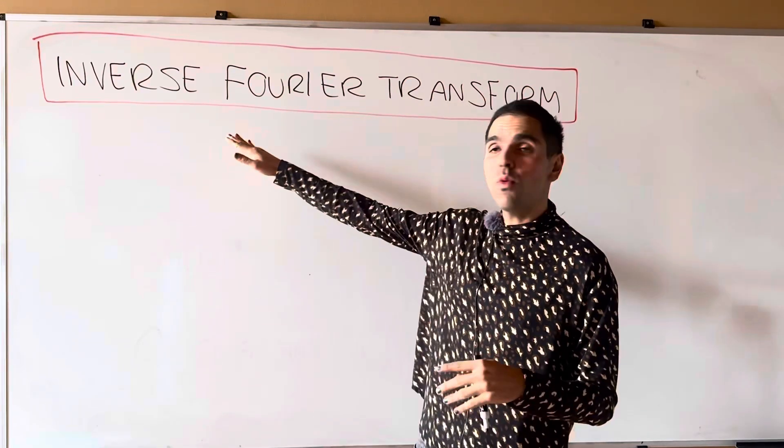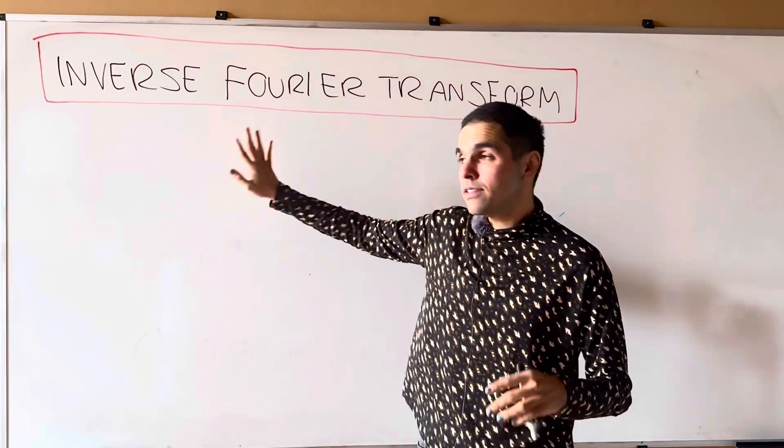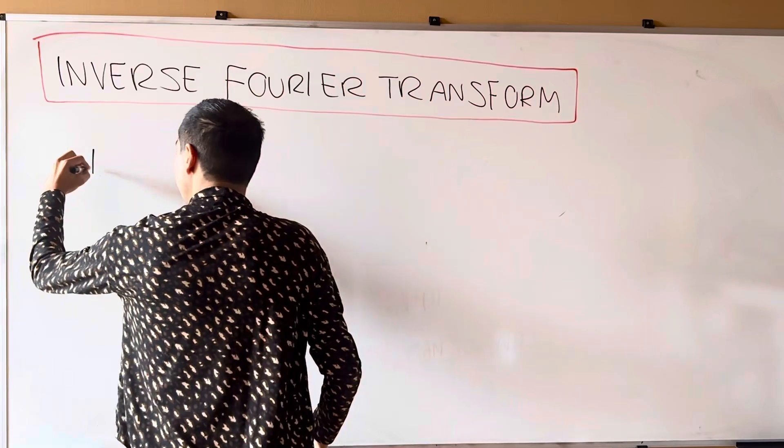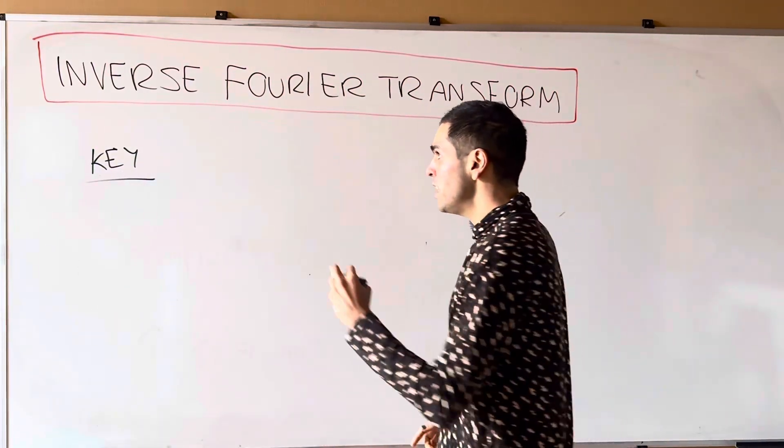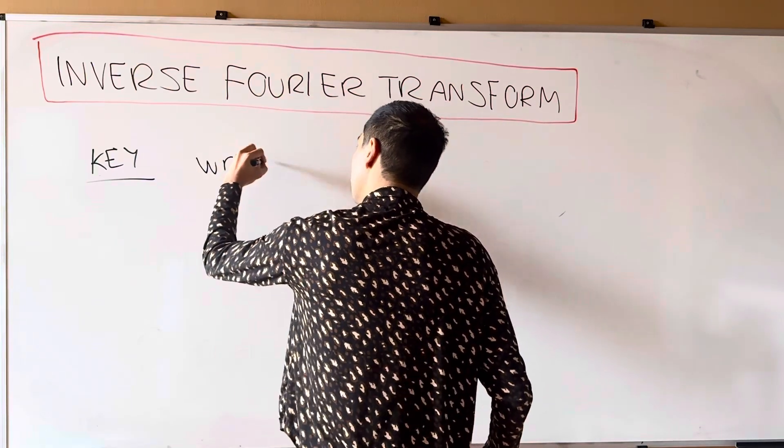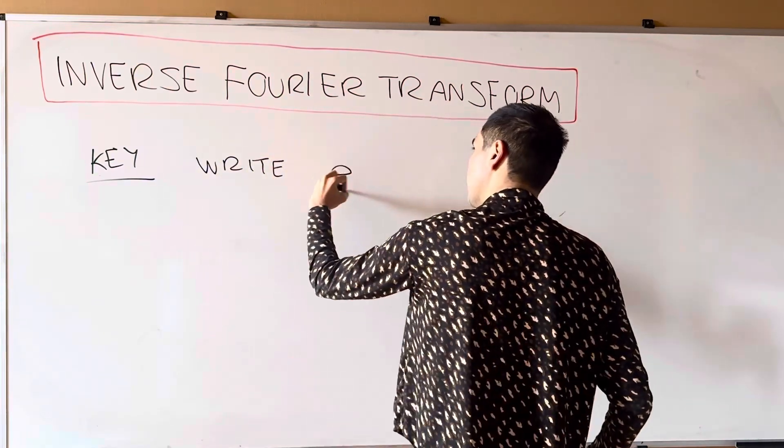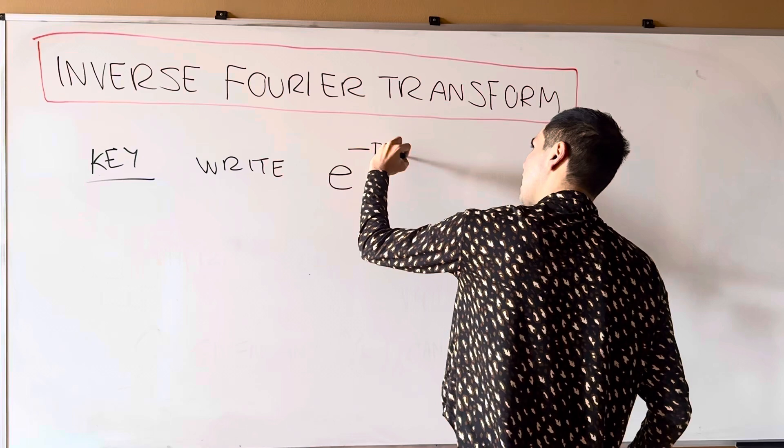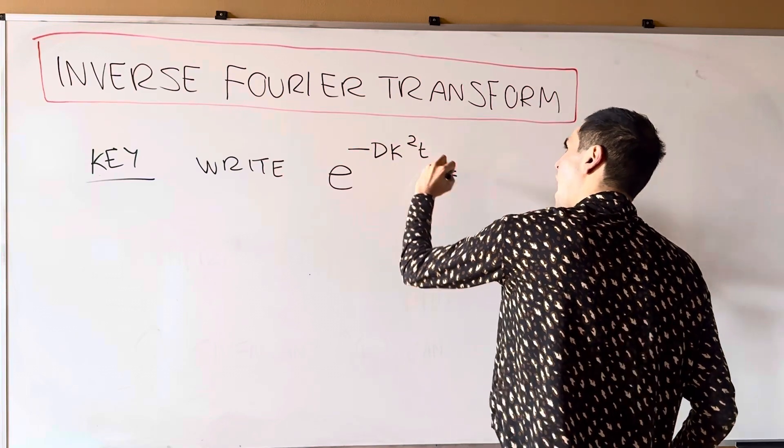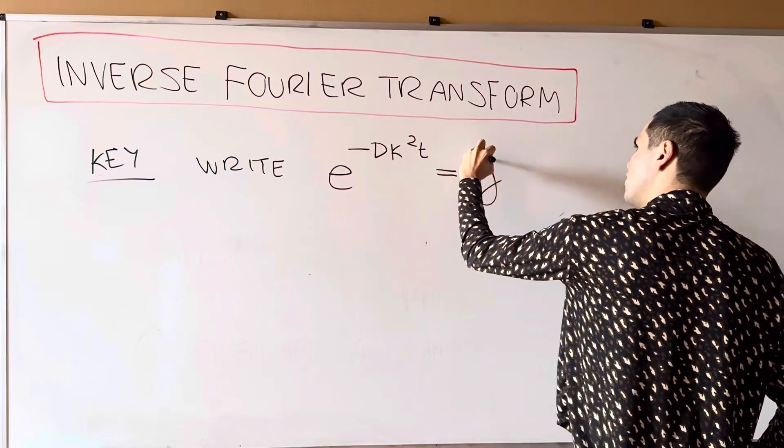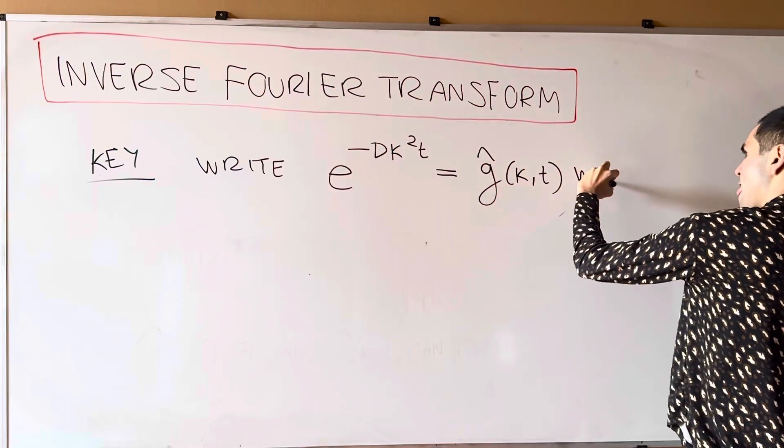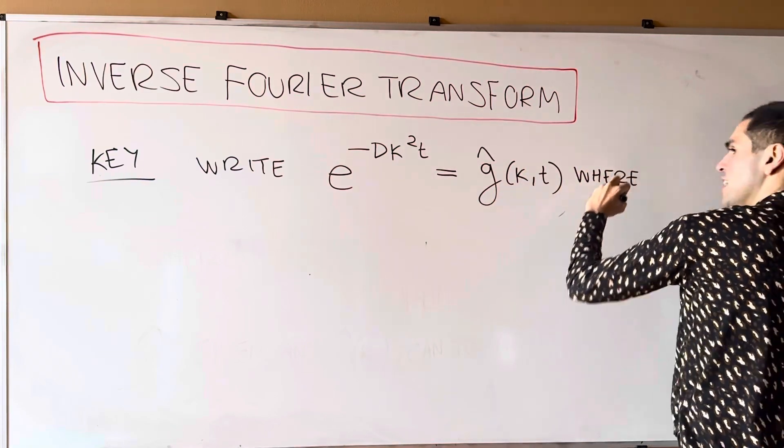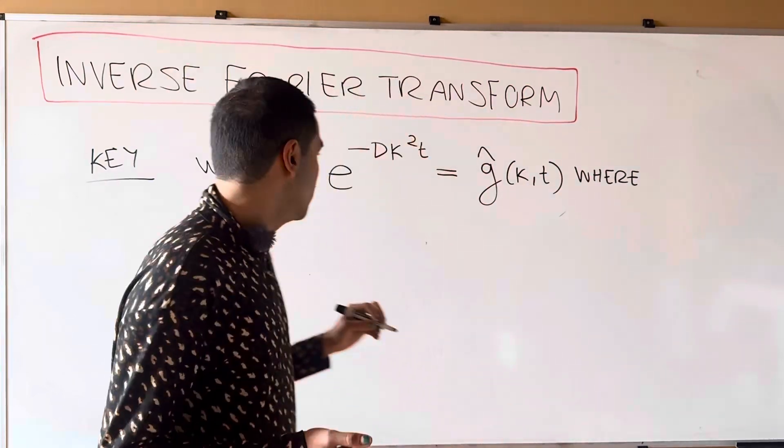Now, you may wonder, why do we need this? If you remember, the key for solving the heat equation is really to write the Gaussian, so e of minus d kappa squared t, as the Fourier transform of some function, where what is g, it's precisely the heat kernel.